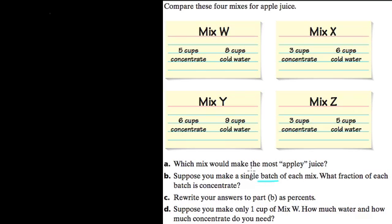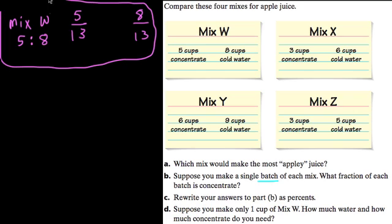Suppose you make a single batch of each mix. What fraction of each batch is concentrate? So with mix W, we have 5 cups of concentrate to 8 cups of water. If we pour them together into the container, that gives us 13 cups altogether. So the fraction of concentrate would be 5 out of 13, and the fraction of water would be 8 out of 13 cups. This is our water and this is our concentrate, and that's for mix W. So that's basically how this question works. We're just going to set up these fractions each time. There's concentrate and water.